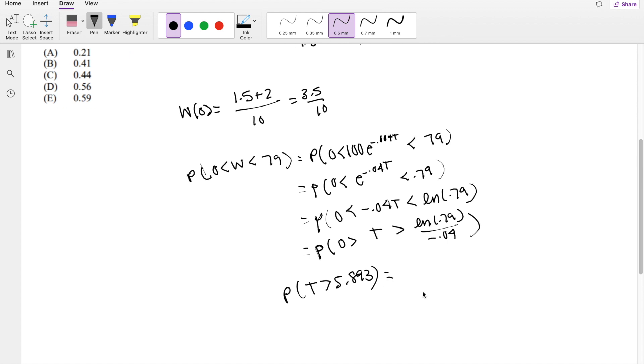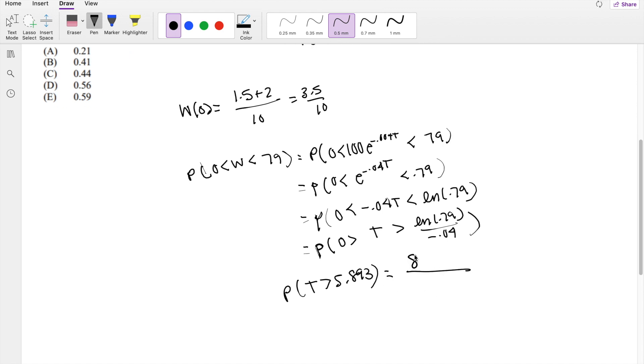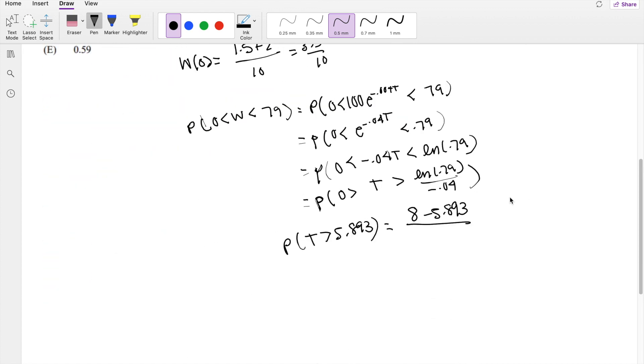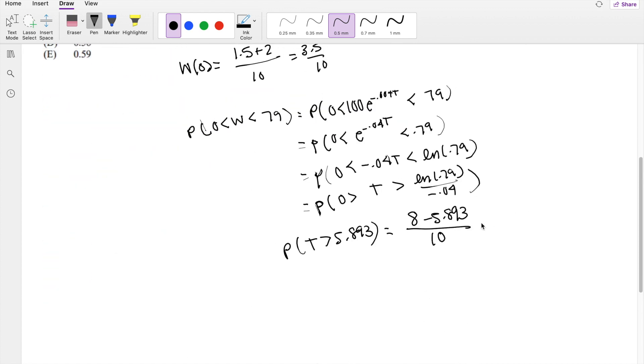So the probability that T is greater than 5.893 is bounded by 8 minus 5.893. The probability density is 1 over 10. So this equals 8 minus this number divided by 10, which is 2.1 divided by 10.